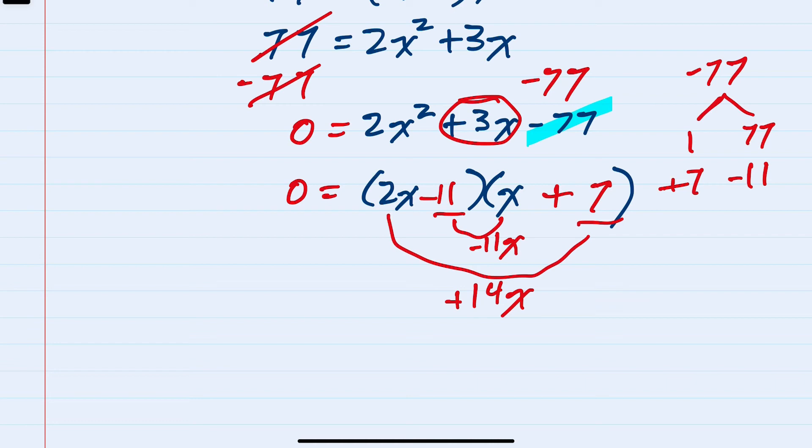So we have factored the quadratic. And since we have two terms being multiplied with the result of 0, that means that either the first term, 2x minus 11, must be 0, or the second term, x plus 7, must be 0, in order to multiply and have a result of 0.